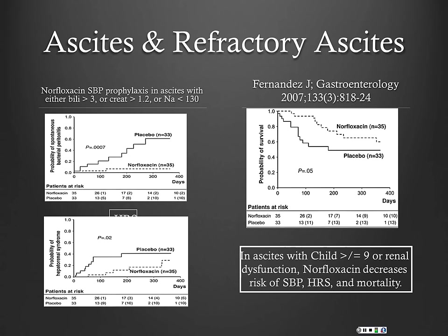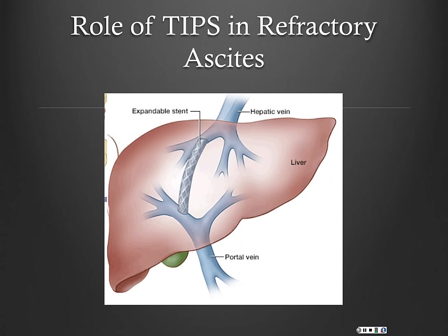SBP prophylaxis with norfloxacin — regardless of total protein in your ascites — is for patients with a high Child-Pugh score: bilirubin greater than 3, creatinine greater than 1.2, or hyponatremia. These patients actually do better on quinolone therapy with regard to prevention of HRS compared to those not on quinolones. Think about antibiotic therapy as well.